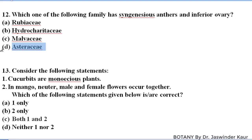Consider the following statements: cucurbits are monoecious plants, and in mango, neuter, male and female flowers occur together. We have to identify the correct statements. Monoecious plants are those which have both male and female reproductive organs in the same individual. Cucurbits being monoecious is correct. In mango, three types of flowers occur together — neuter, male and female. Both statements one and two are correct.